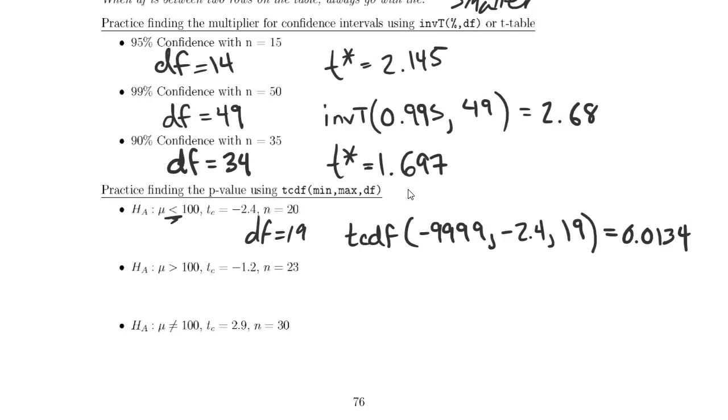In the second example, we want to claim that mu is greater than 100, but our test statistic is negative. What that means is that our sample mean was less than 100, which means it's not going to give us very much evidence for the alternative.